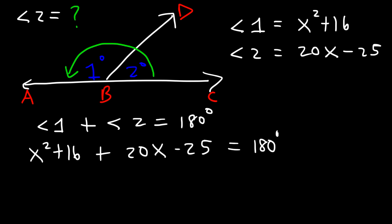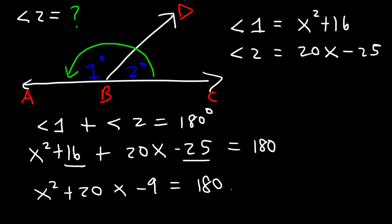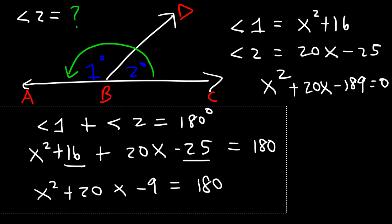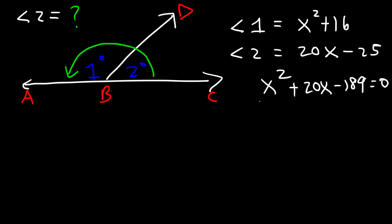Simplifying the equation: 16 minus 25 is negative 9, so we have x squared plus 20x minus 9 equals 180. Notice we have a quadratic equation, so we move 180 to the left side by subtracting both sides by 180, giving us x squared plus 20x minus 189 equals 0. To find x we can use the quadratic formula or factor. We need two numbers that multiply to negative 189 but add to positive 20.